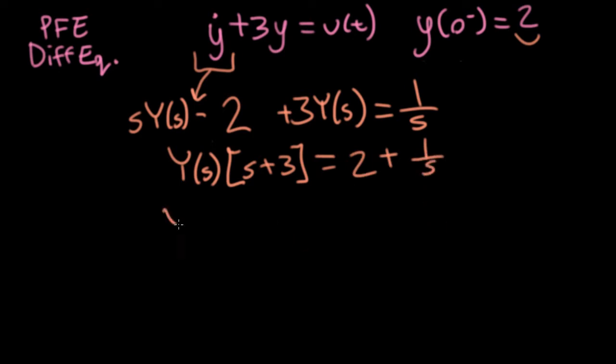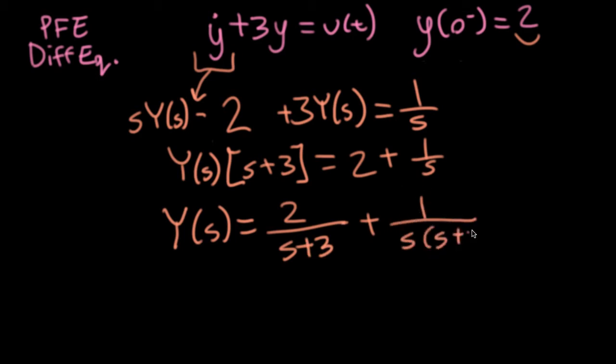So now I want an explicit expression for big Y of s. So I will divide this 2 here by s plus 3. And here I'll have 1 over s, the existing s, and now I'm dividing it by s plus 3.